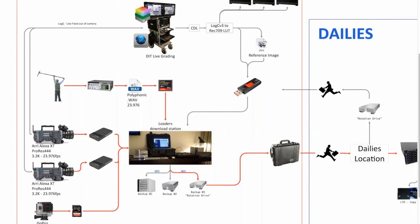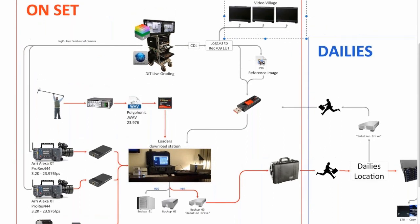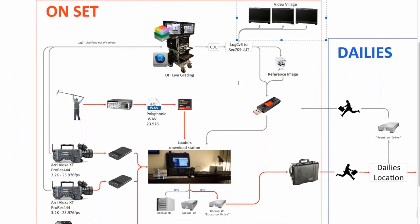I use the umbrella term 'engineering' for anything in that world — that would be anything where I'm actually touching, dealing with, or modifying the camera signal. Not what's being recorded, but what's being output over a video cable or wireless. So color correction, monitoring four cameras on a quad split, sending that out to the video village. It's not uncommon in the commercial world to be monitoring literally 20 cameras at once on something like a hidden camera commercial.